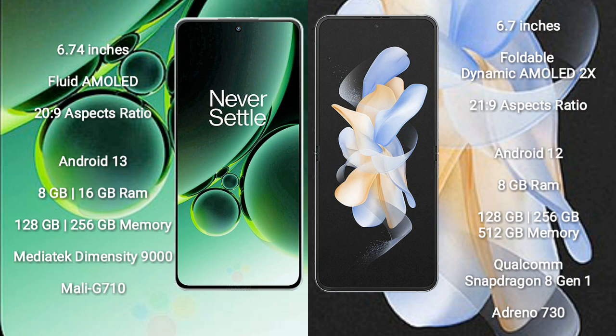The OnePlus Nord 3 comes with 8 GB or 16 GB RAM and 128 GB or 256 GB internal storage, powered by the MediaTek Dimensity 9000 processor with Mali-G710 GPU. The Samsung Galaxy Z Flip 4 comes with 8 GB RAM and 128 GB, 256 GB, or 512 GB internal storage, powered by the Qualcomm Snapdragon 8 Gen 1 processor with Adreno 730 GPU.